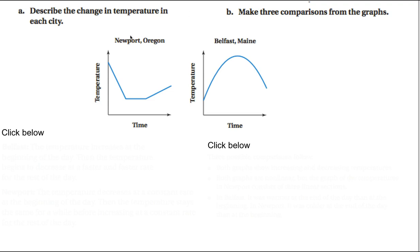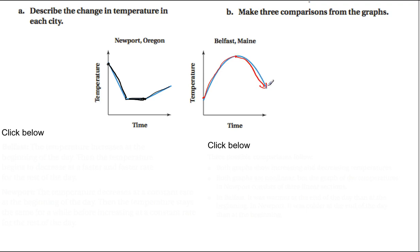Describing the change in temperature for two cities — Newport and Belfast. In Newport, the temperature gets colder as the day progresses, stays constant for a while, then starts to warm up again. In Belfast, it gradually gets hotter toward the middle of the day, then gradually starts to decrease again.